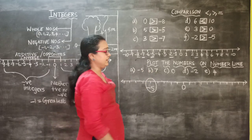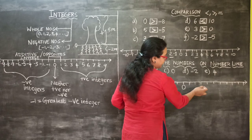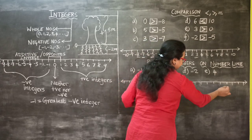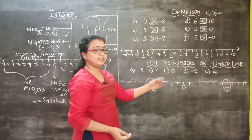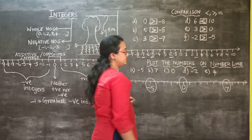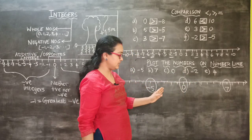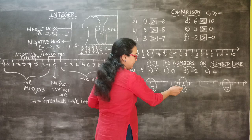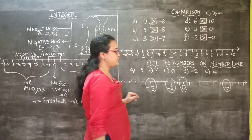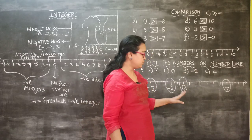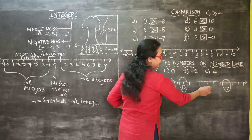For positive 7, count 7 steps to the right from 0: 1, 2, 3, 4, 5, 6, 7 — marked here. Zero is already marked. For minus 2, count 2 steps to the left: minus 1, minus 2 — marked here. For positive 4, count 4 steps to the right from 0: 1, 2, 3, 4 — marked here.